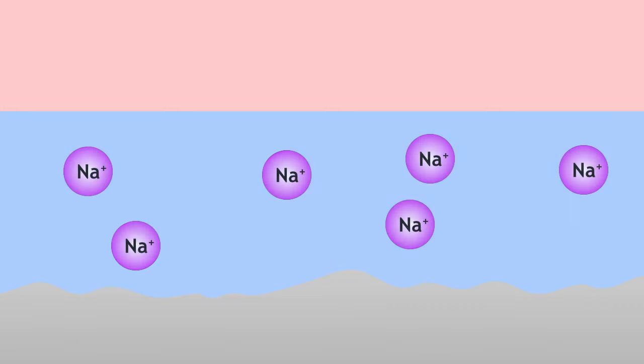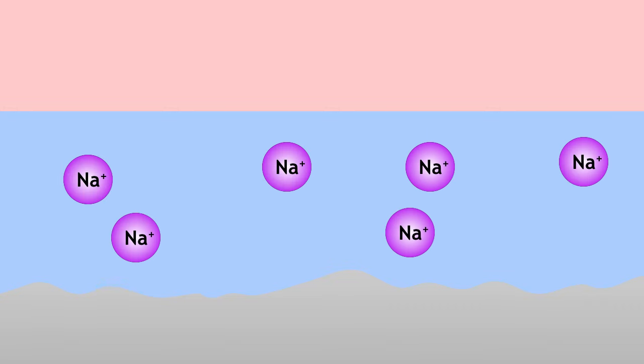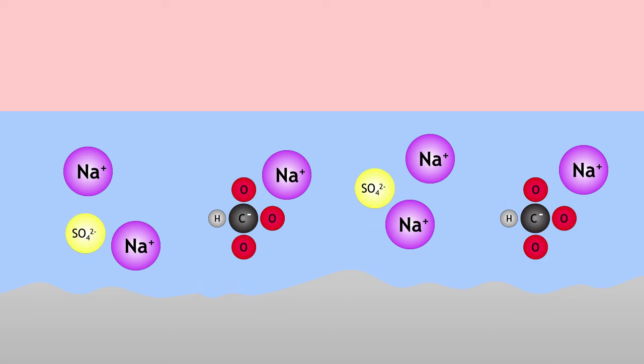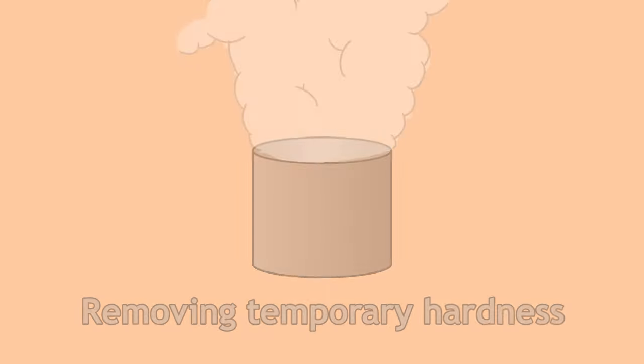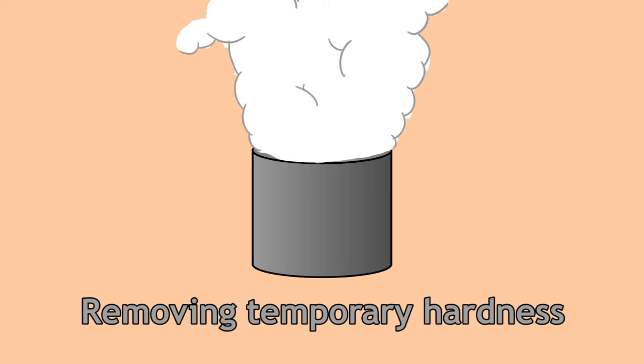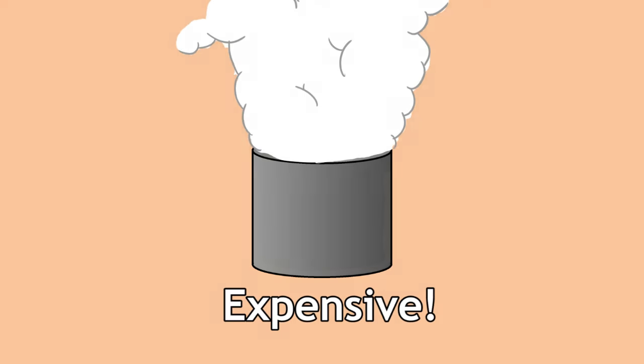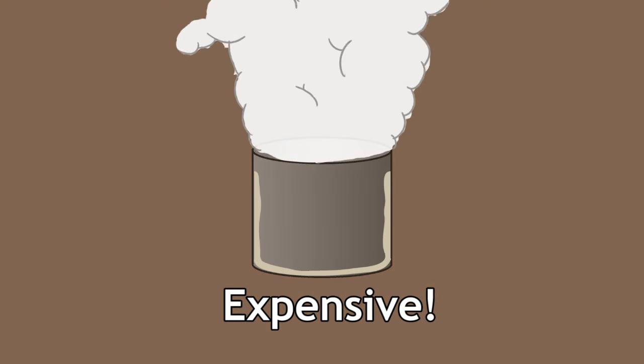Now only the sodium ions remain in solution, balancing the sulphate or hydrogen carbonate that used to be with the calcium. You can remove temporary hardness by boiling the water, as we learnt in the previous unit, but this is expensive and causes lime to deposit on the sides of your container.